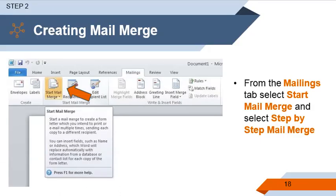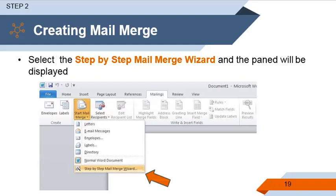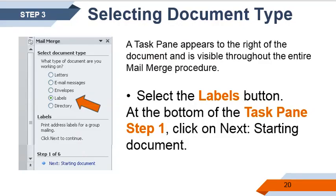Step two, creating mail merge. From the Mailings tab, select Mail Merge and select Step-by-Step Mail Merge. Next, select the Step-by-Step Mail Merge result and the pane will be displayed. Next step, selecting document type — a task pane will appear to the right of the document and is visible throughout the entire mail merge procedure. You need to select the Labels button at the bottom of the task pane, then click on Next: Starting Document.